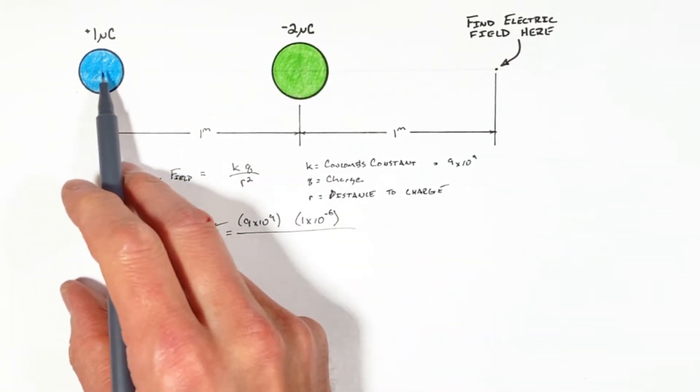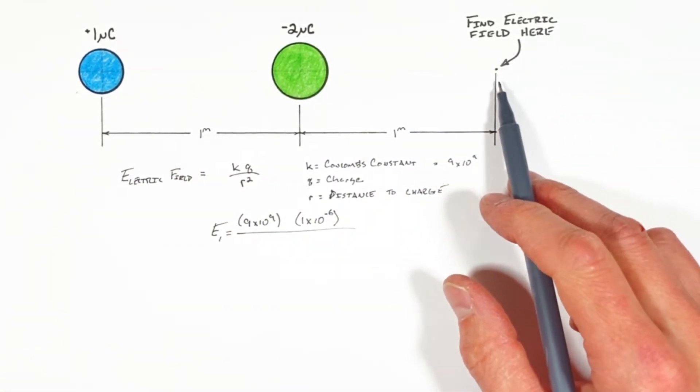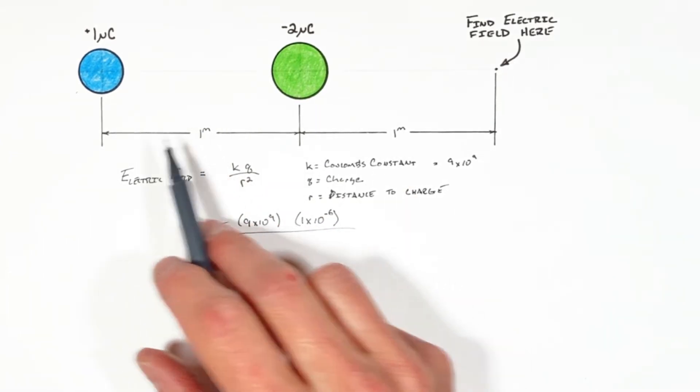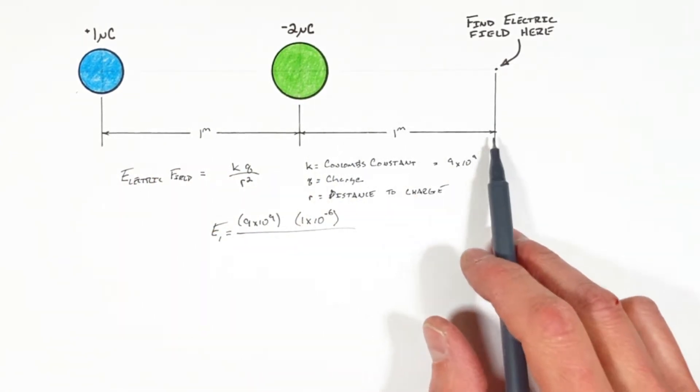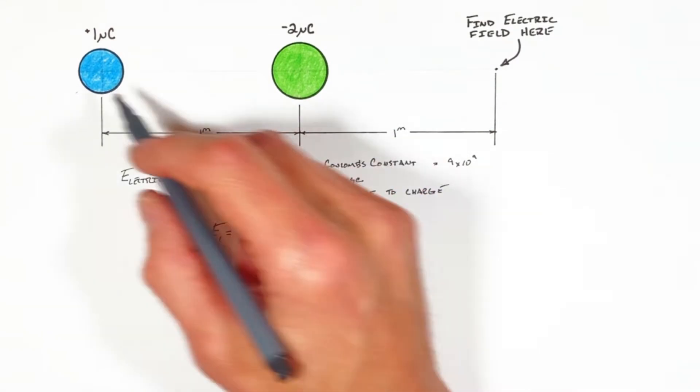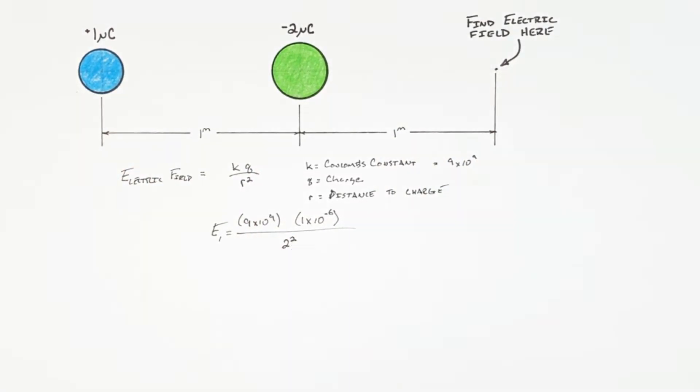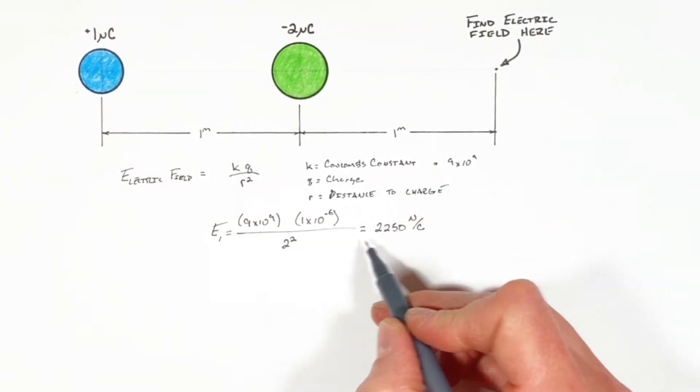Divided by the distance between this charge and this point we're concerned with. In this case it's not 1 meter, but it's 1 plus 1 more meter, or 2 meters from here to there. And that gives us an electric field strength of 2,250 newtons per coulomb.